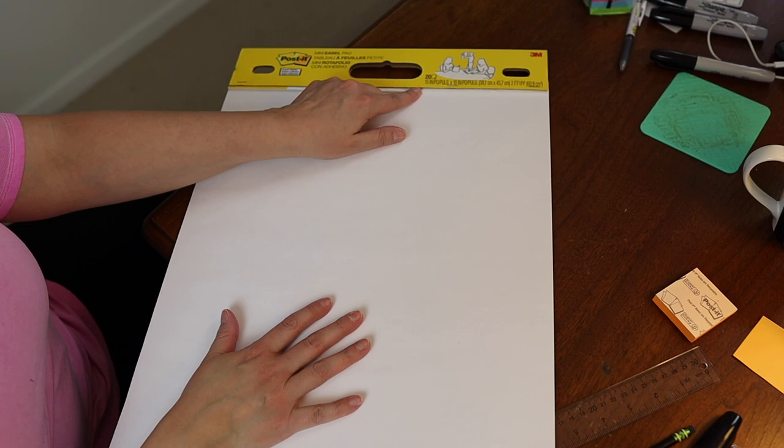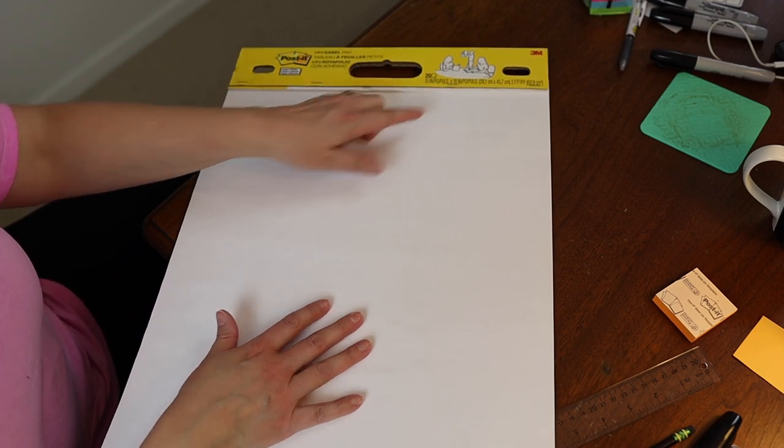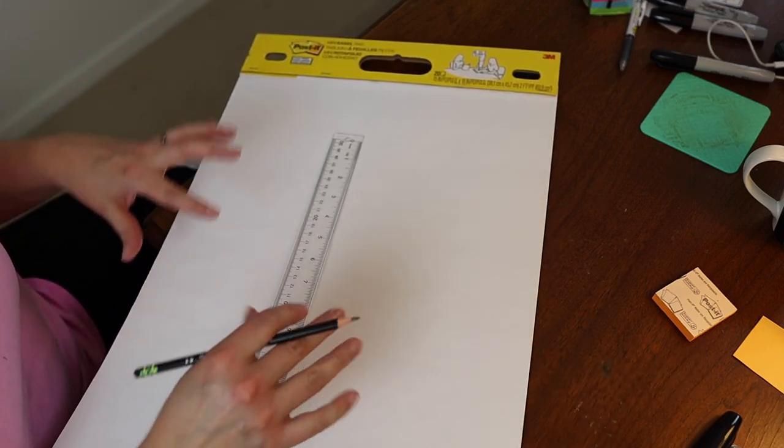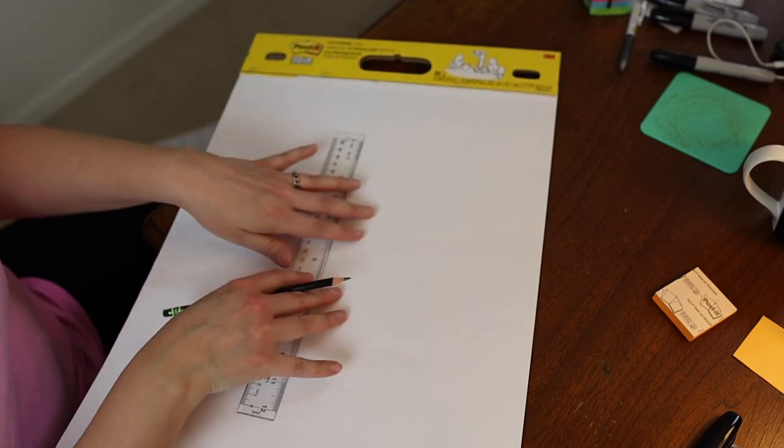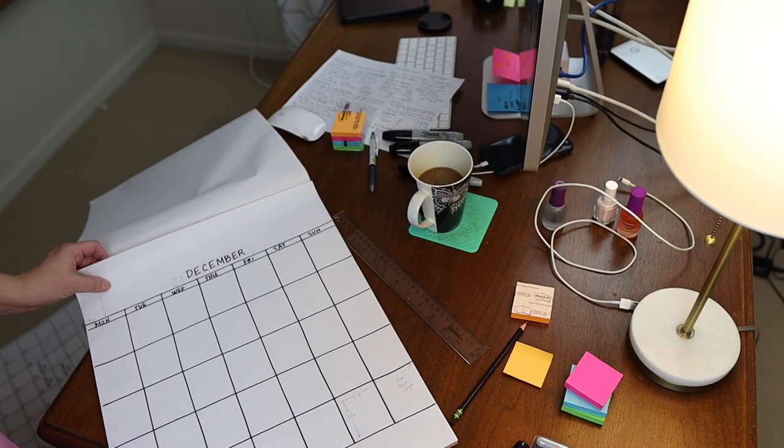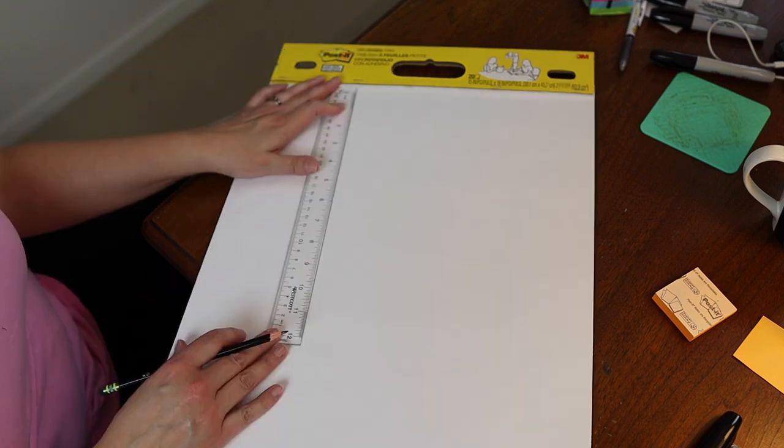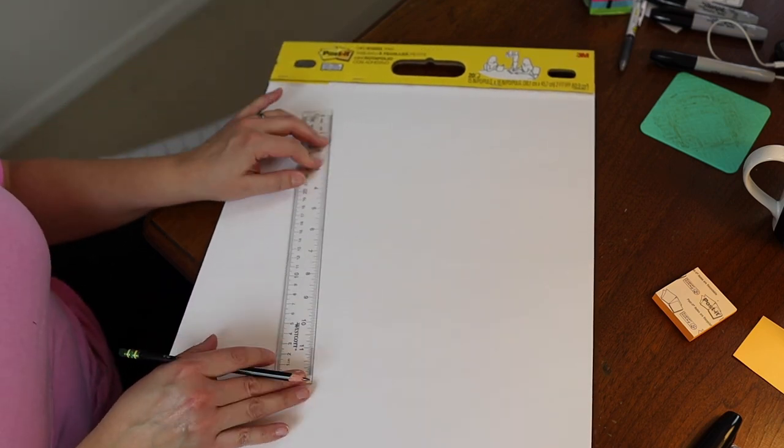So like I already mentioned, this is 15 inches wide by 18 inches high. We're going to use our ruler and our pencil. Now you only have to do the measurements and all this stuff once, and then you can use this as a template and just trace the other pages.